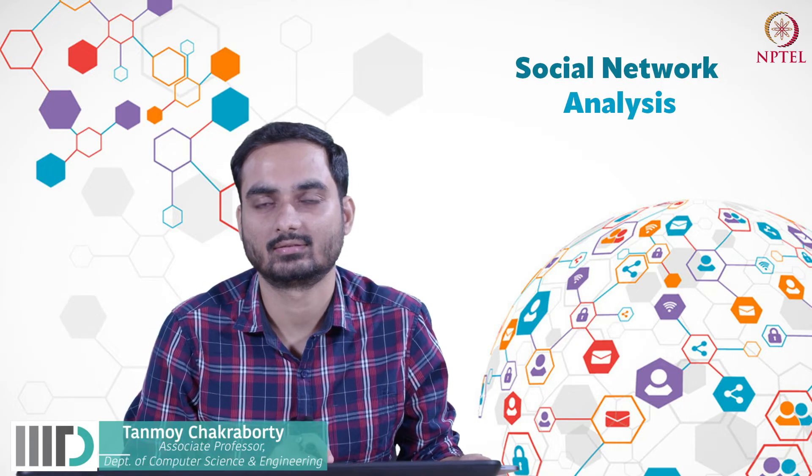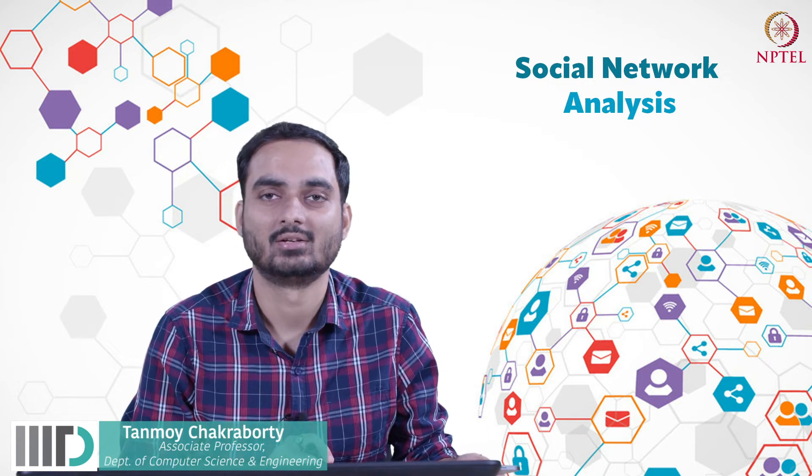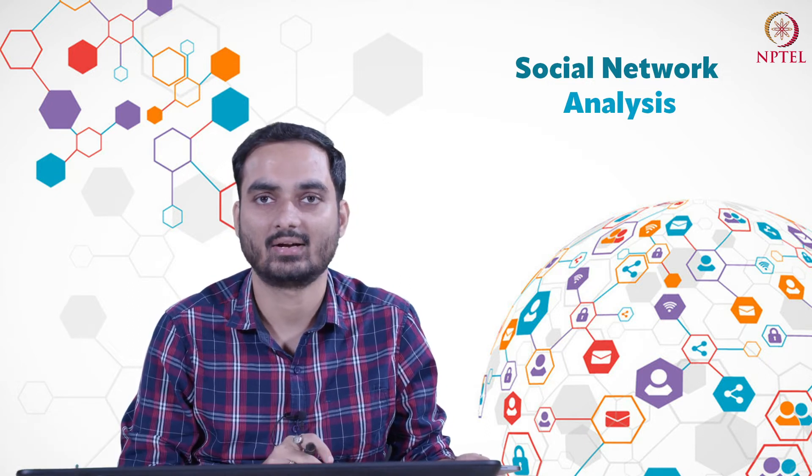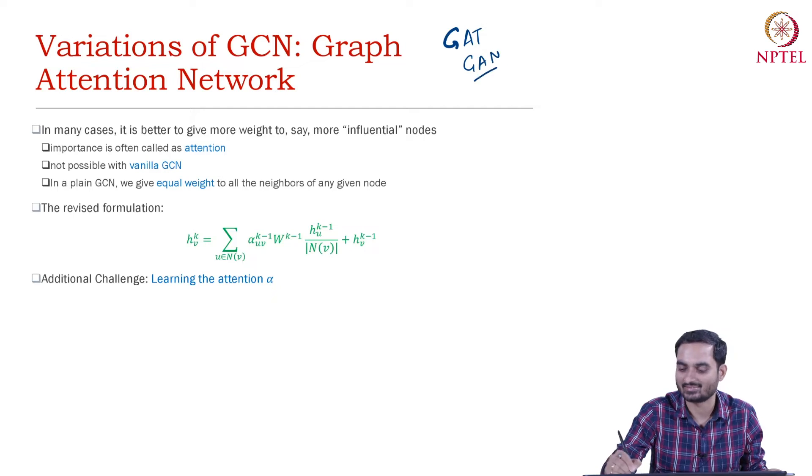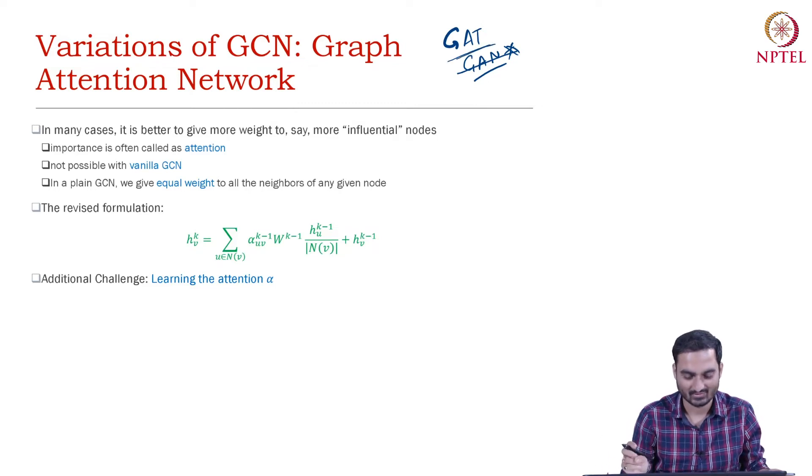Let us now discuss the last concept of this chapter, which is Graph Attention Network. It's also called GAT. GAN is not the right terminology because we have Generative Adversarial Network, which is also abbreviated as GAN. So GAT is the right term.